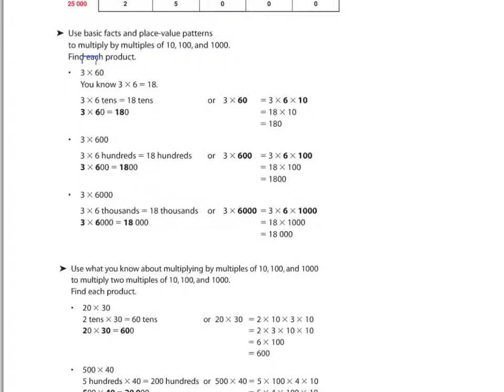3 times 60. Well, what is 3 times 6? 3 times 6 is 18. We have now 3 times 6 tens. So that means 18 tens. Well, 18 tens is 180. Or 3 times 6 is 18. I had one zero in my question that I took off, I annexed. I'm going to add it back on. 180.